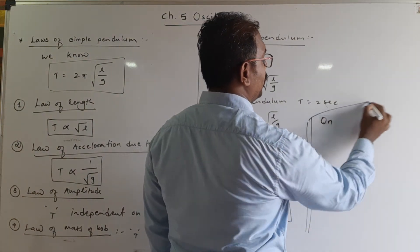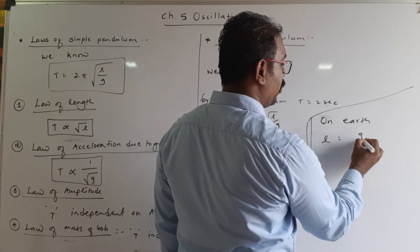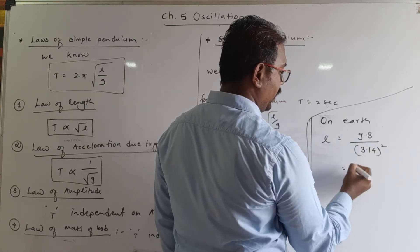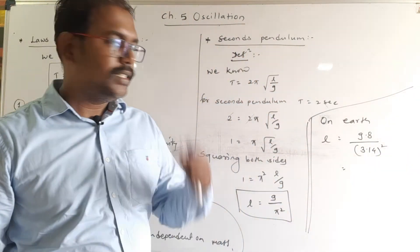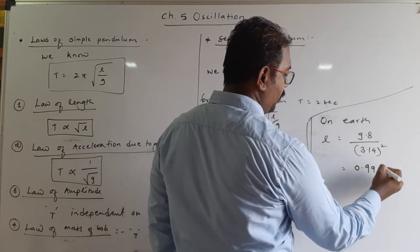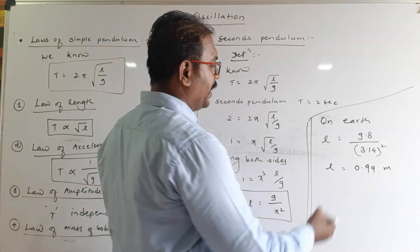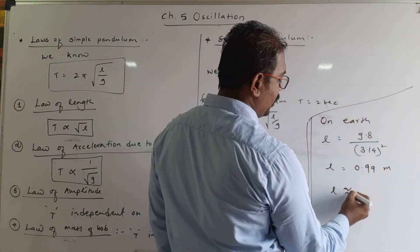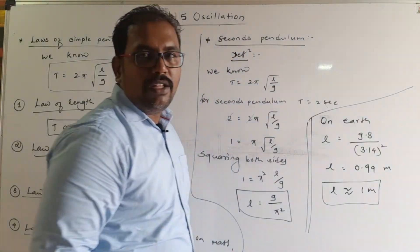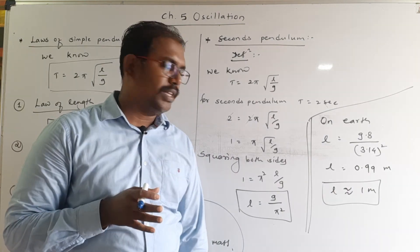On Earth, the average value of g is 9.8 and π is 3.14. Its square, after simplifying, gives l = 0.99 meters, which is approximately equal to one meter. This means if the length of a simple pendulum is one meter, its period is approximately two seconds on the surface of Earth.